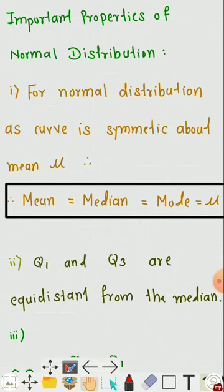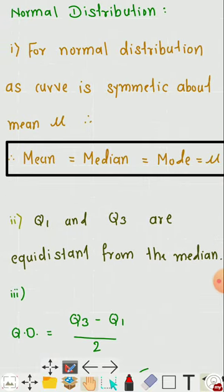The properties of the normal curve are very interesting and useful. The normal curve plays an important role in statistics. The first important property is: for a normal distribution, since the curve is symmetric around μ, the mean, median, and mode are identical and each is equal to μ. Therefore, mean = median = mode = μ.